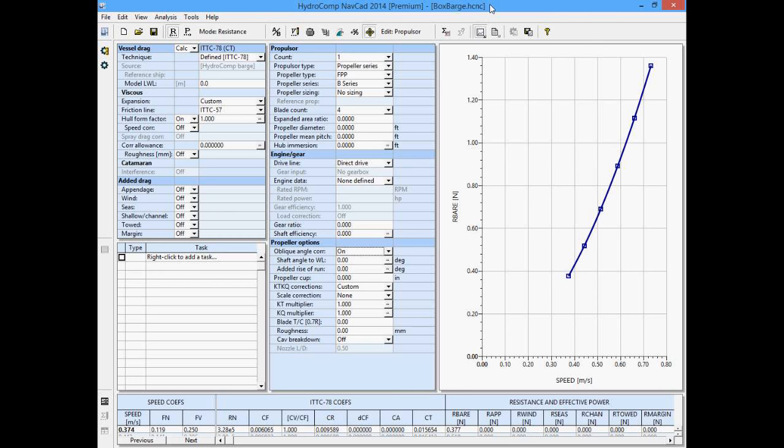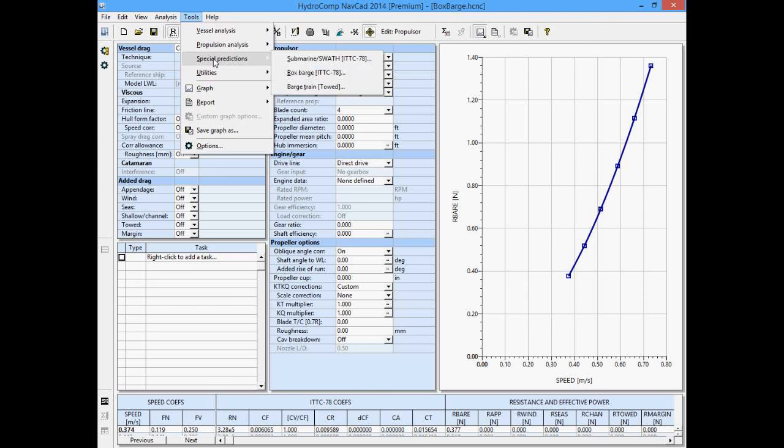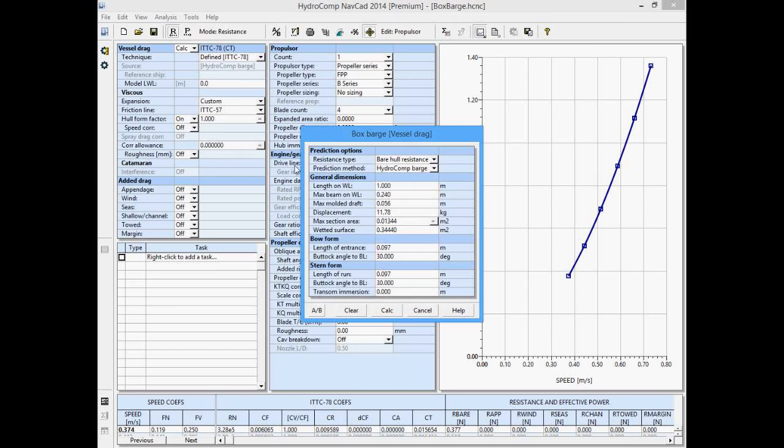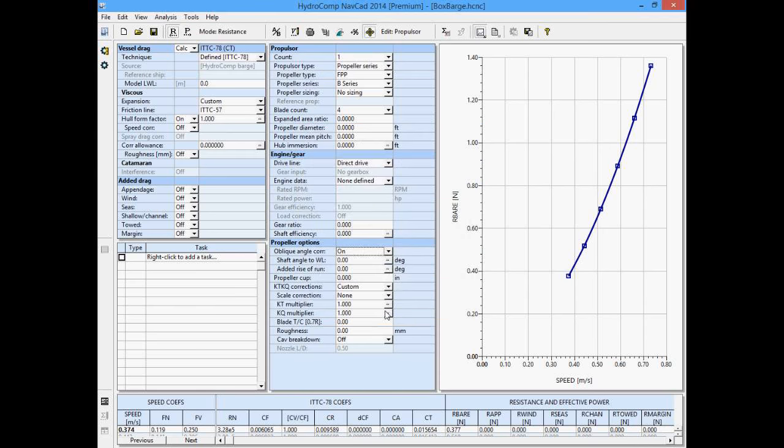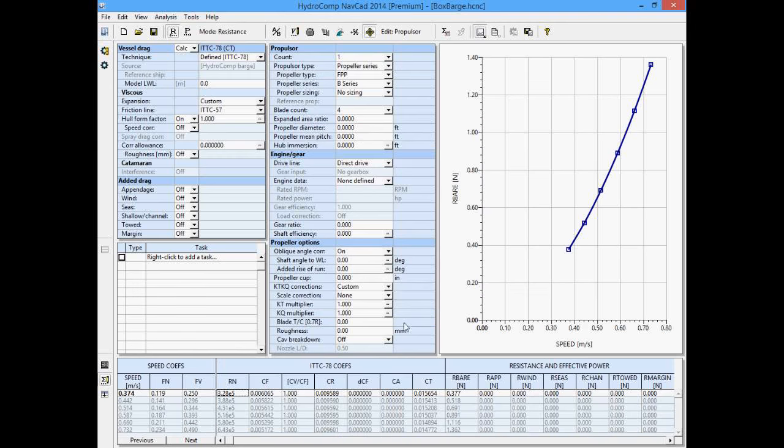While we're here in NavCAD, before we wrap up, I want to show you just one particular sample of a resistance prediction for our box barge. When you go into your supplemental tool and you open this up and you run a calculate, what it's going to do is it recalculated the figures here, posted this into the R bare column, and then here's our plot.